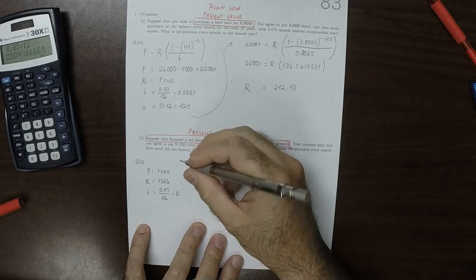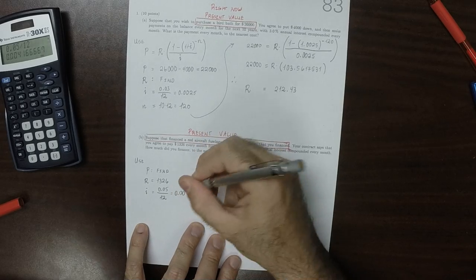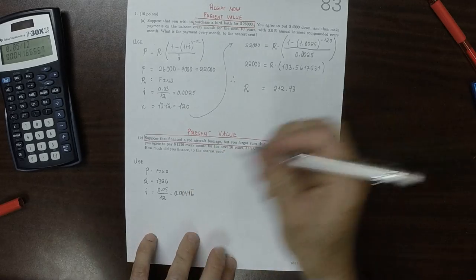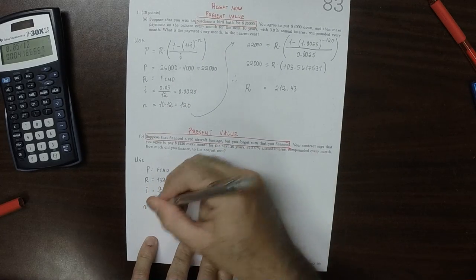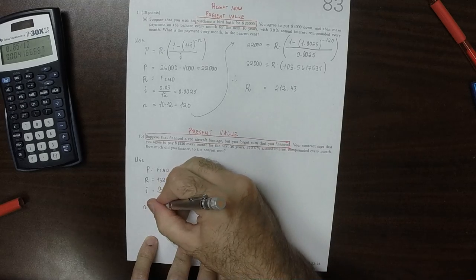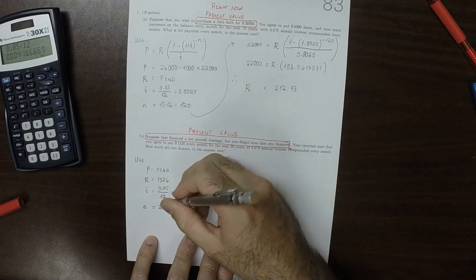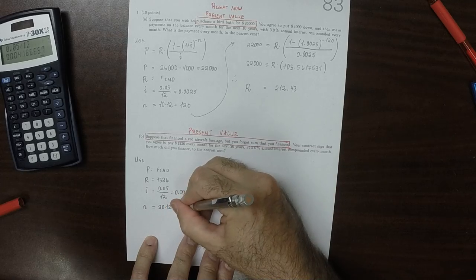So, that's 0.00416, and that 6 is repeating. And then N is 20 years, but that's 20 years times 12 months per year, which is 240 months.